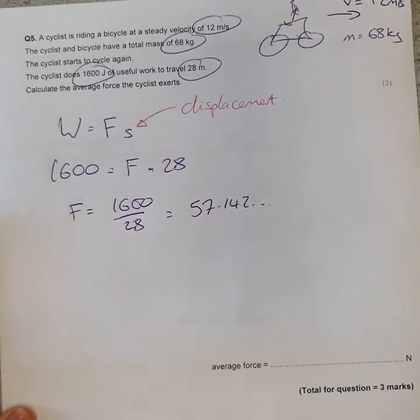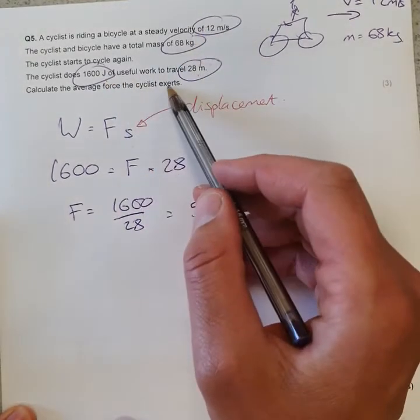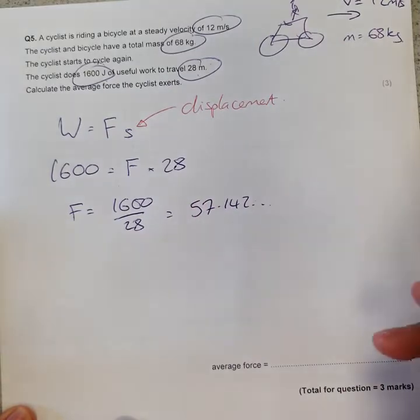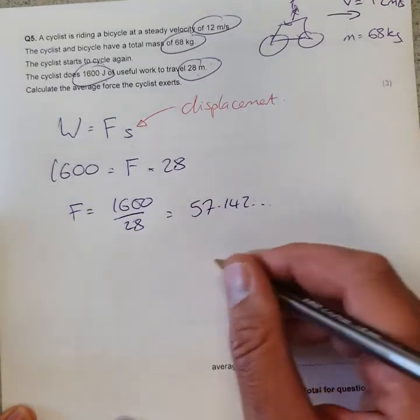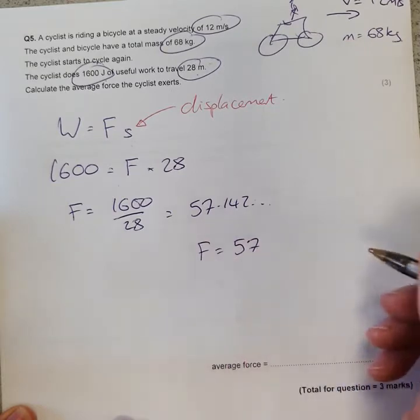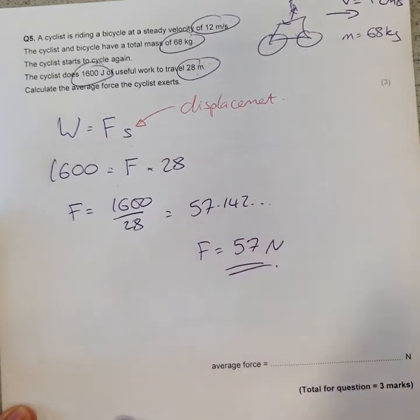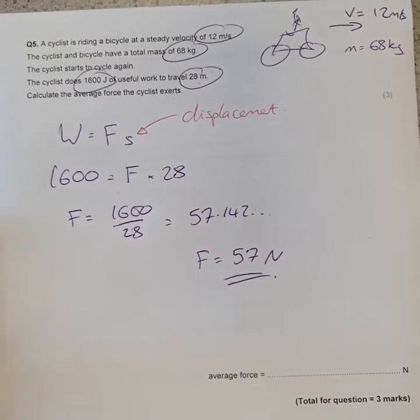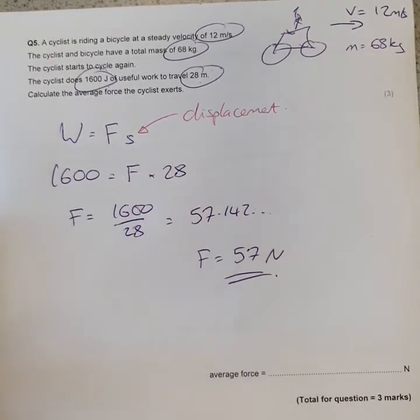1600 divided by 28 gives me an answer of 57.142. Let's round that off - all our numbers here are to two significant figures, so let's round this to two. So F is 57, and it's a force, so we're in Newtons.